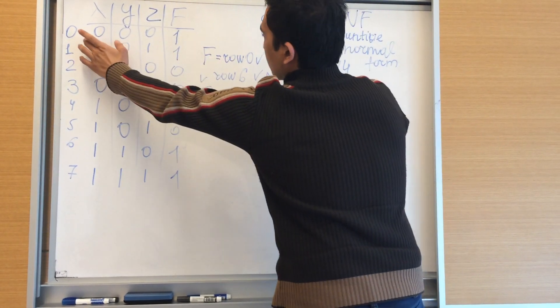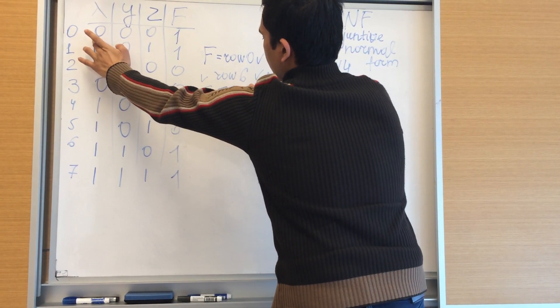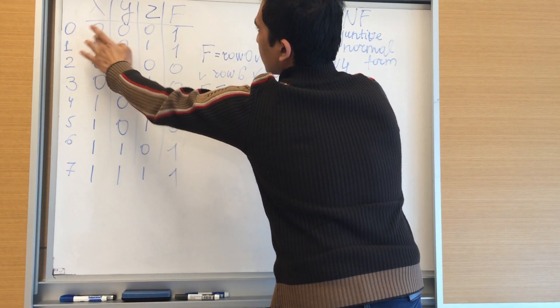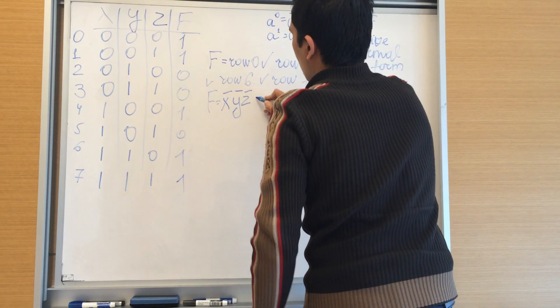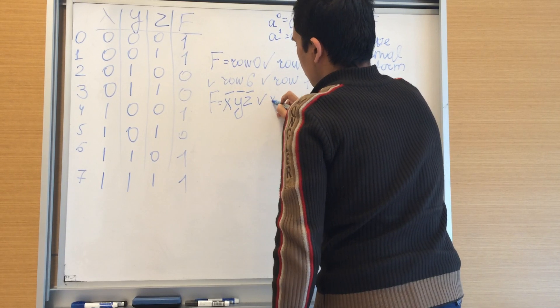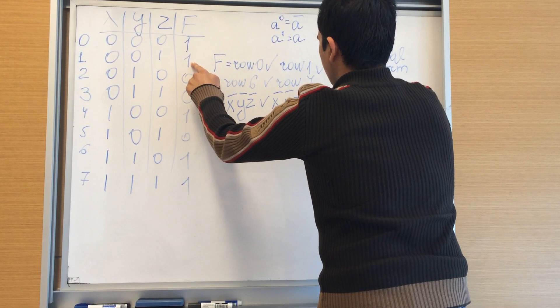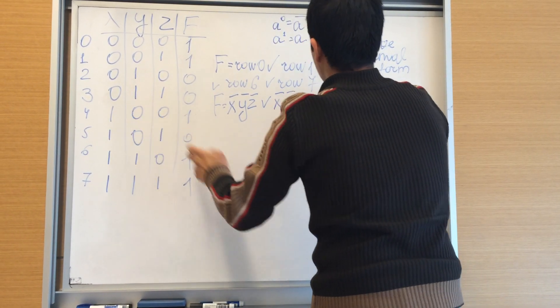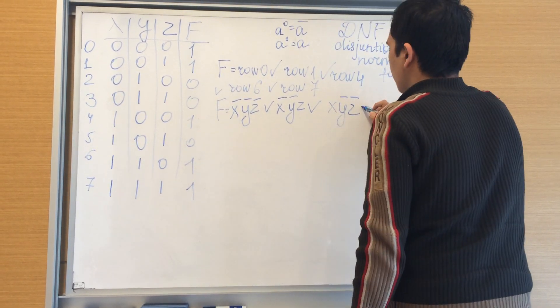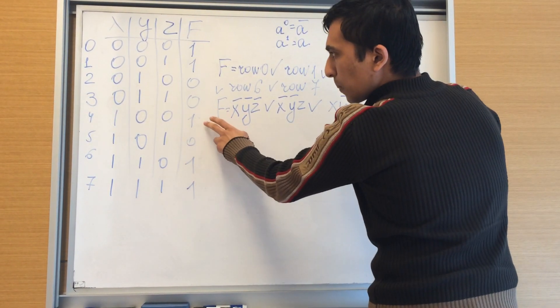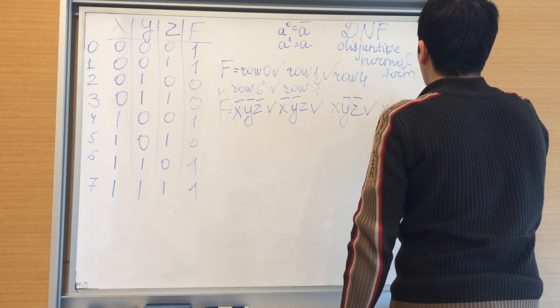Row 0: X negated Y negated Z negated, or X negated Y negated Z, or row 4: X Y negated Z negated, or X Y Z negated, or X Y Z.